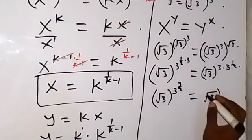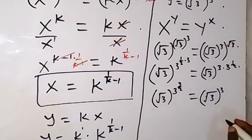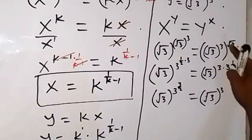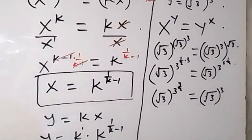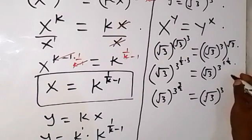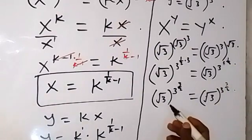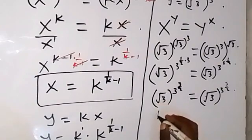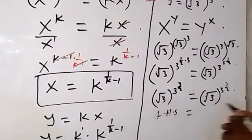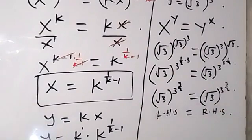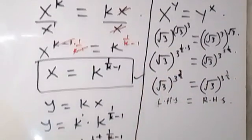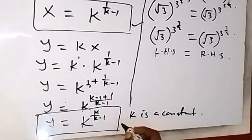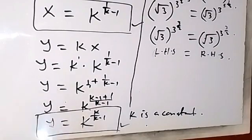When we compare, we see that the left hand side equals the right hand side. Therefore the solution — x equals k raised to power 1 over k minus 1, and y equals k raised to power k over k minus 1 — satisfies the problem. Thank you for joining us. You can subscribe to this channel for more videos. See you in the next class, and bye for now.